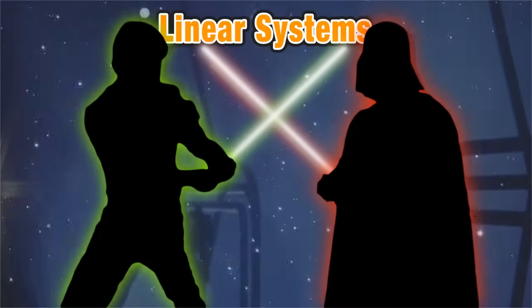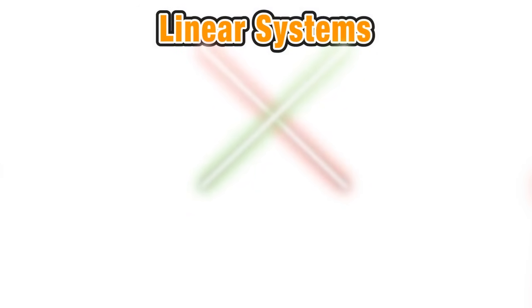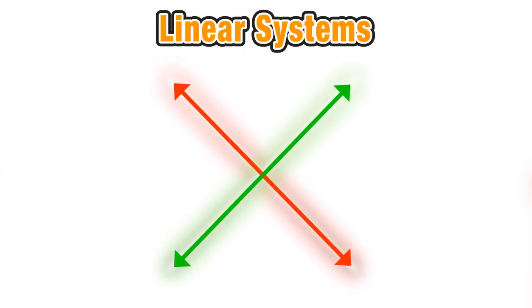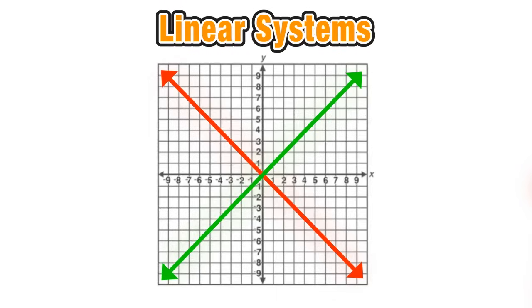Just like a pair of interlocking lightsabers, this lesson on linear systems is going to discuss intersecting lines on the coordinate plane. And when those lines intersect, the point in which they hit each other will be called the solution to a system of linear equations.